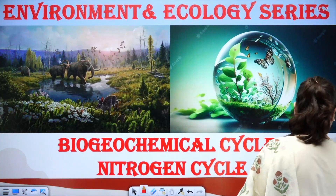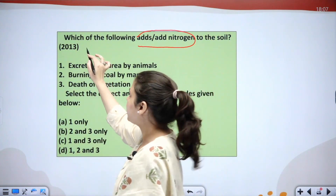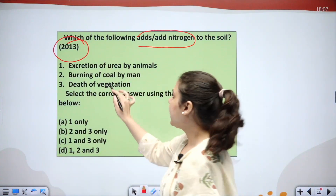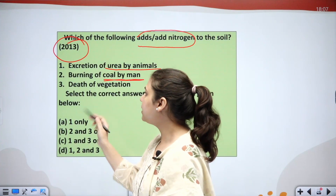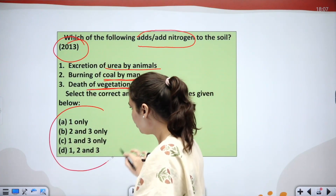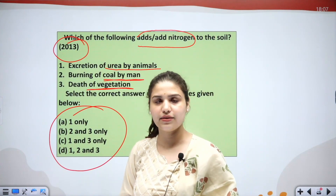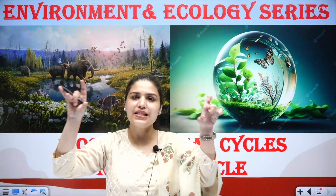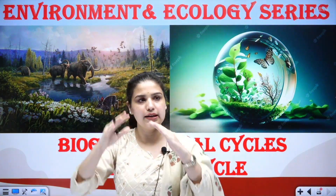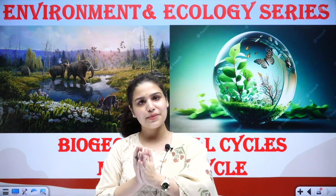Here is a UPSC Prelims 2013 question: which of the following adds nitrogen to the soil? Option one: excretion of urea by animals; option two: burning of coal by men; option three: death of vegetation. Please give the correct answer in the comment section and we will discuss it in the next class. I hope you have understood how the nitrogen cycle functions. Please like the video and subscribe to the channel. Thank you.